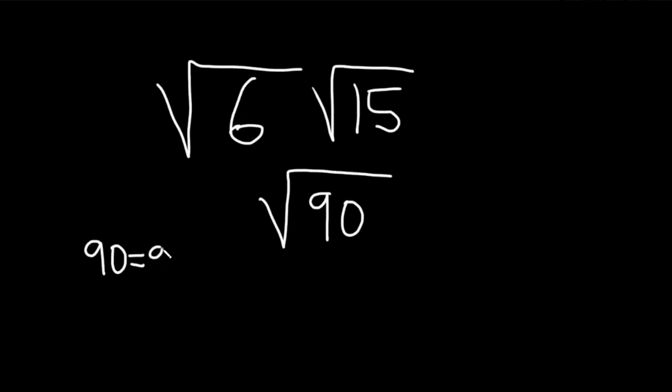So 90 is 9 times 10. And then 9 is 3 squared. And 10 is 2 times 5.